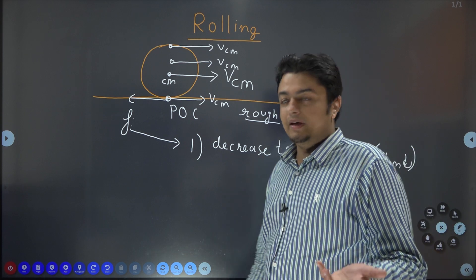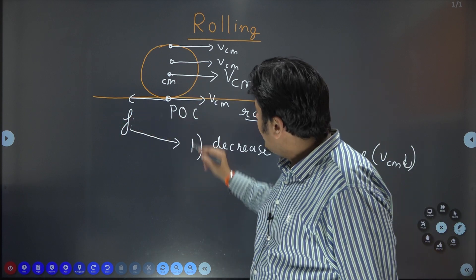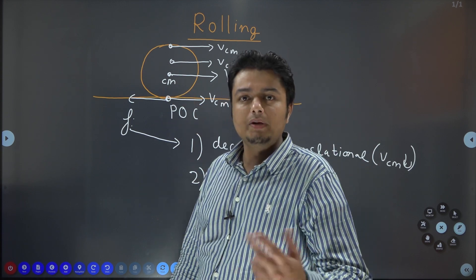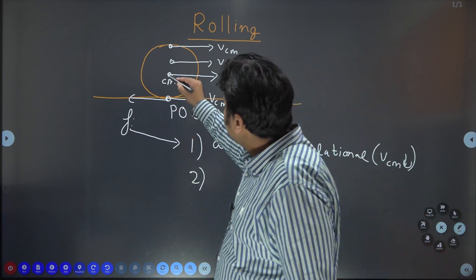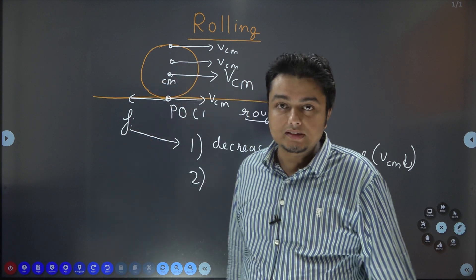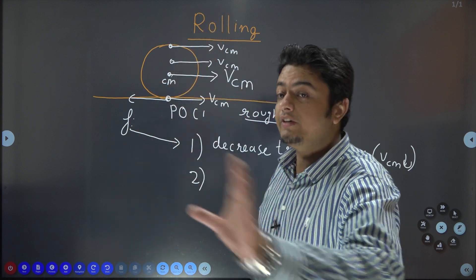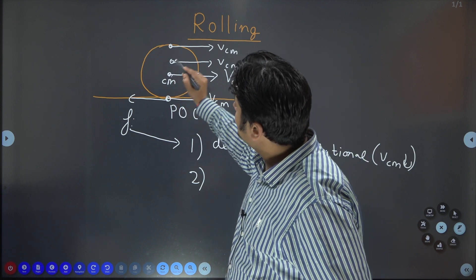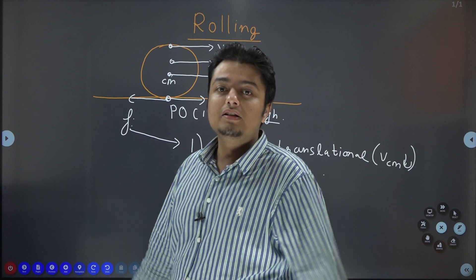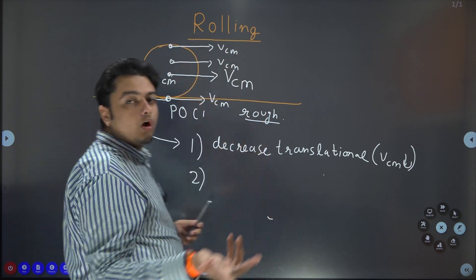But what will friction do about the center of mass? This is also applying a torque. Who is applying a torque? Nobody else, friction. See, mg passes through the POC, mg passes through the center of mass. Normal reaction also passes through the center of mass. But if you see friction, friction will produce some torque about center of mass. What will be the direction? Simple, right hand thumb rule. R vector, F vector, R cross F, a clockwise torque is produced.